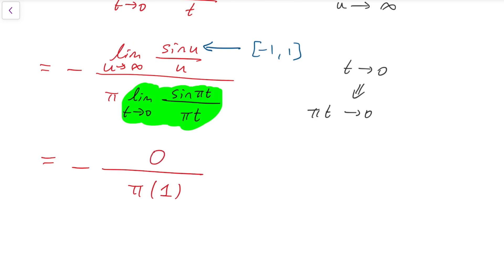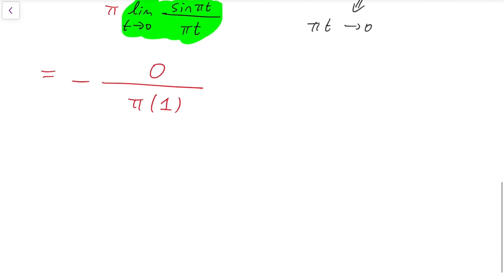So actually, the limit is simply -0 over π. Now that we have the numerator to be 0 and the denominator to be a non-zero number, we can conclude that the limit is exactly 0. So this is the final answer.